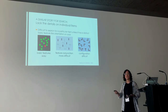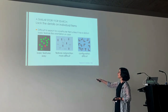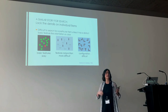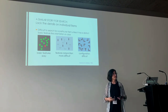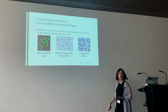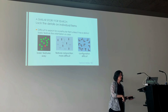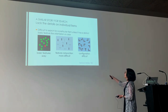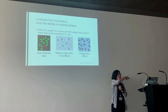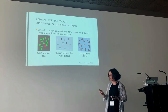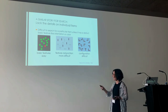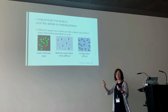Feature-unique searches are very efficient — it doesn't really matter how many items are in the display. Whereas conjunction and configuration searches get harder as you add more items. Feature searches are fast regardless of set size, implying you process the feature map in parallel, while the harder searches require something more serial.